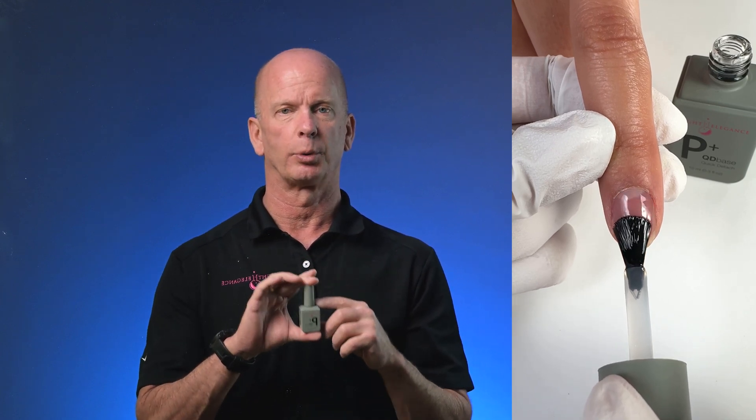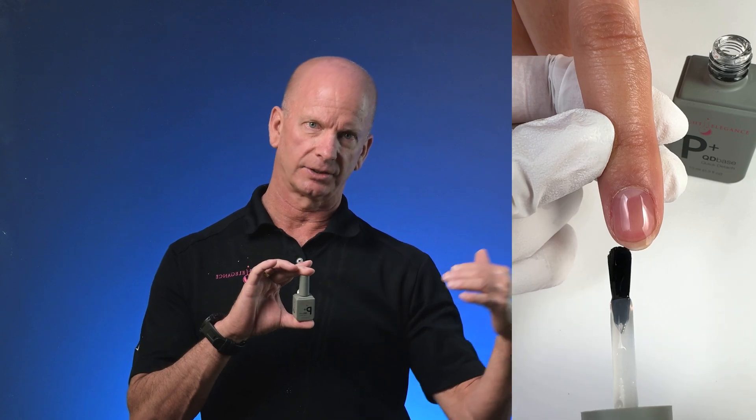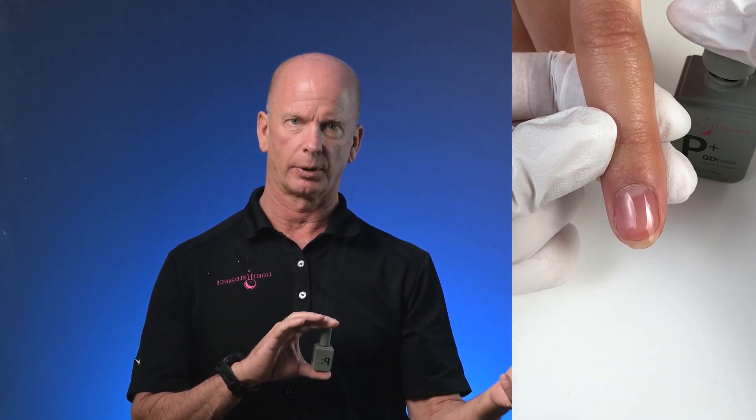The reason why QDBase is important is because of the way it's formulated. The acetone during the soaking process can penetrate through or around the P Plus and around the Jimmy Gel and attack that QDBase faster. If you file and prep that nail just a little bit and thin out the color gel or Jimmy Gel on top of the QDBase, it'll help that acetone penetrate through even quicker and attack that QDBase.